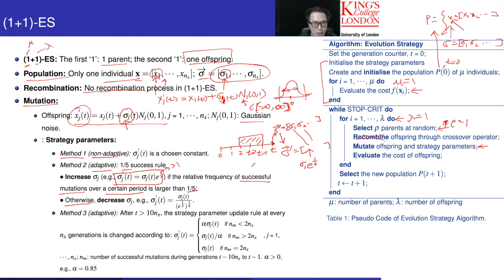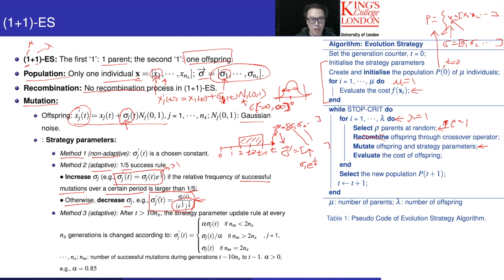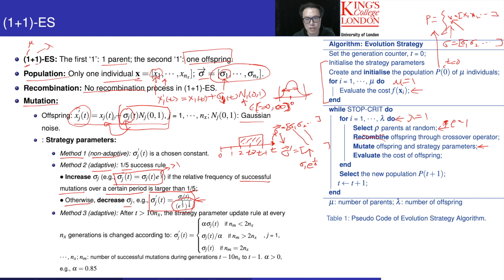Otherwise, if the number of successful mutations is less than one-fifth, we decrease sigma according to a corresponding equation, which leads to a smaller value of sigma. That means if the successful mutation rate is not good enough — less than one-fifth — we reduce the value of sigma to reduce the search area, so we only fine-tune the value of x.